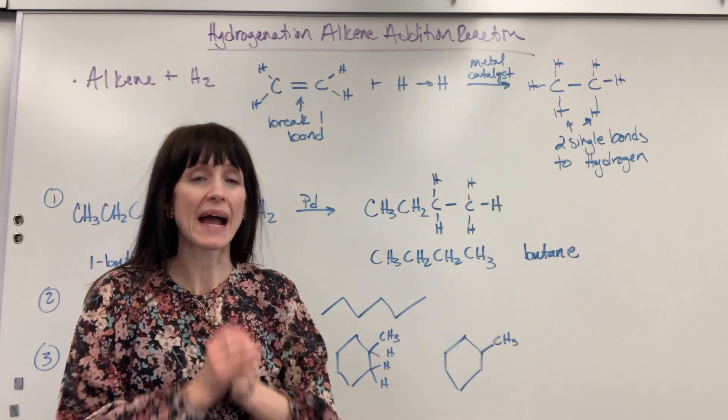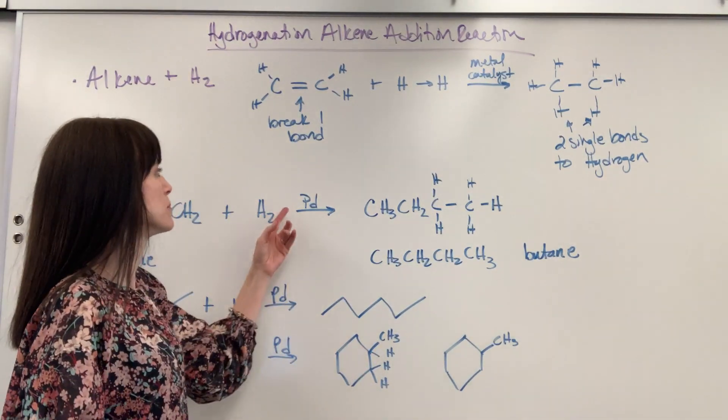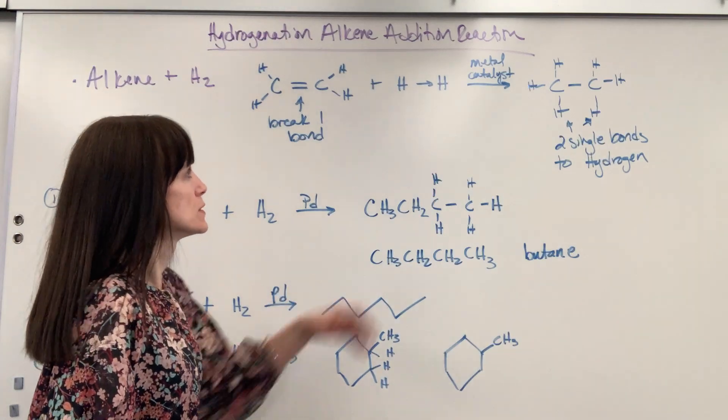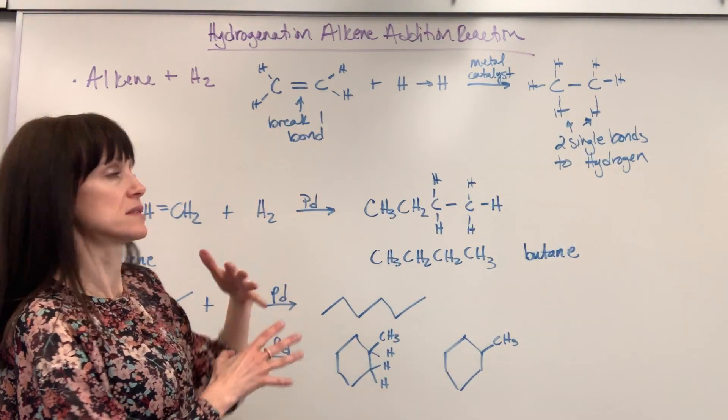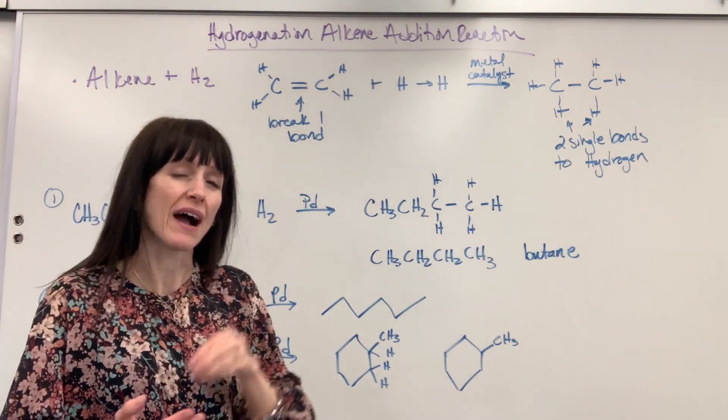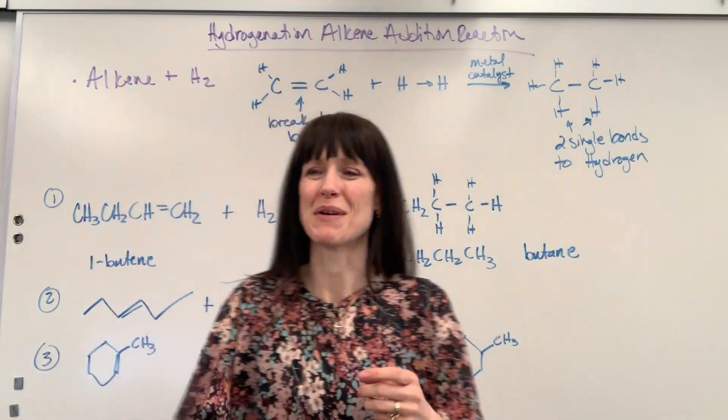Now something really important, we have to use a metal catalyst. An example of that would be palladium. So make sure that you have memorized with your hydrogenation reactions. This is a type of alkene addition reaction that you have to have that metal catalyst. Put that on your note card, your flash card, so that you can memorize these.